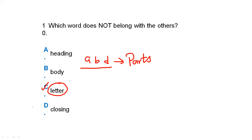So friends, as you have seen in verbal classification, we only have to choose one word that is different while matching the other three and seeing their classification, where grouping is formed. It is not very difficult — just pay a little attention and it can be done easily.